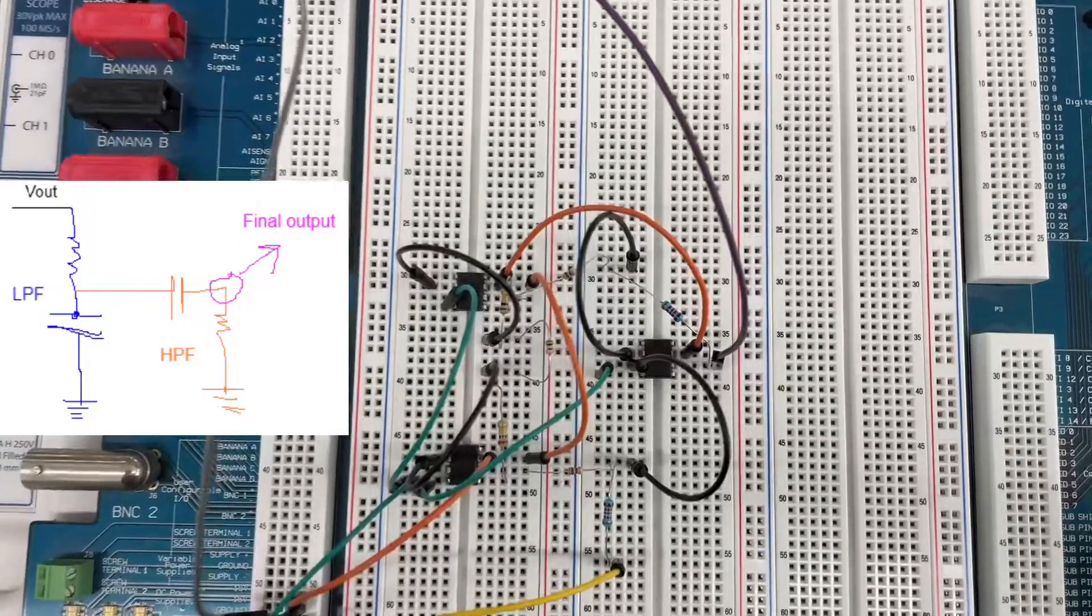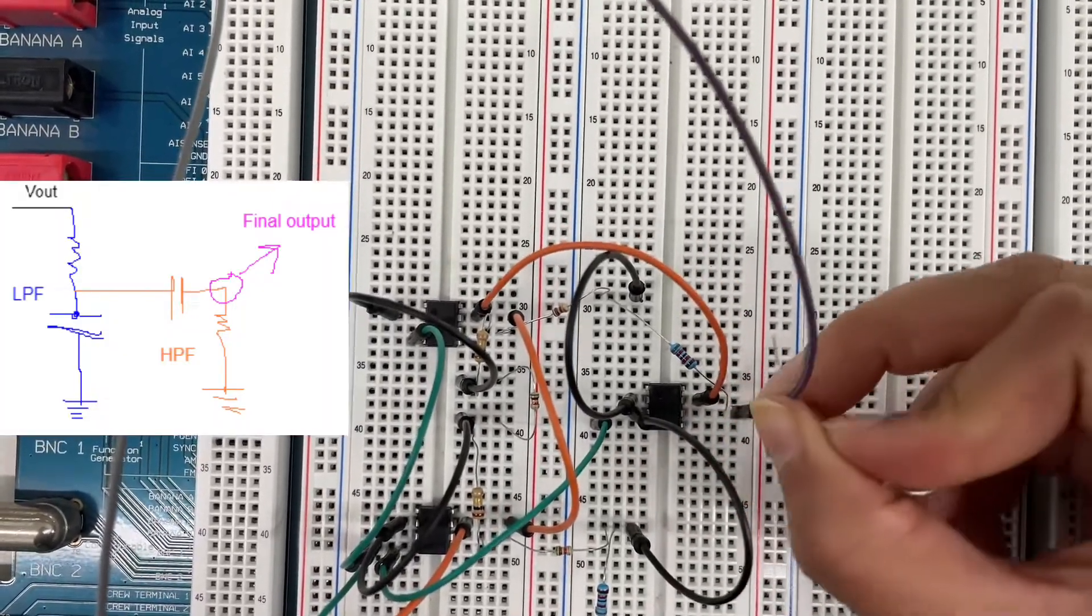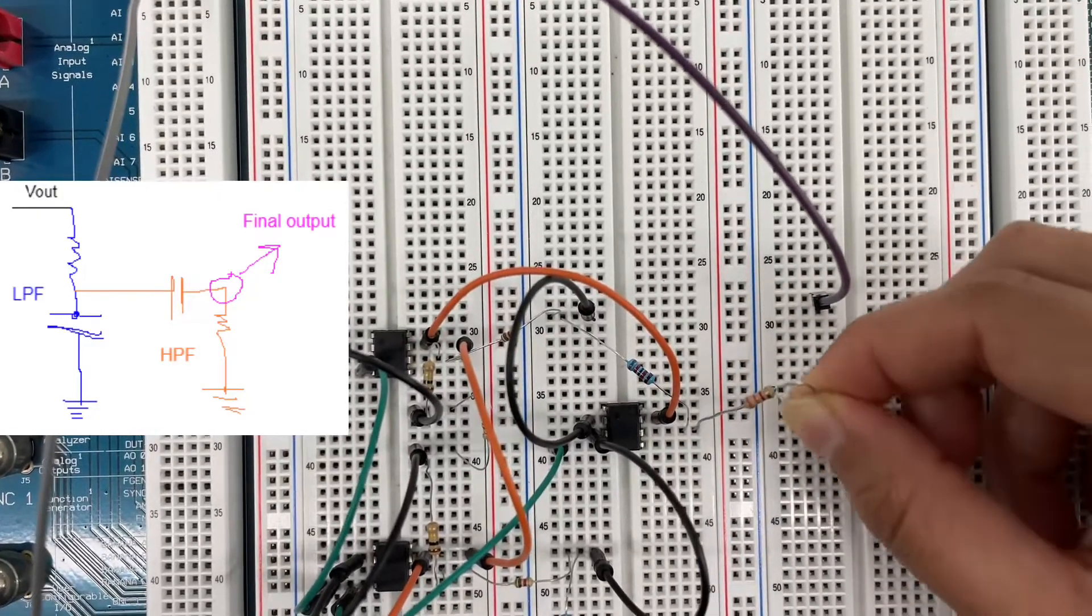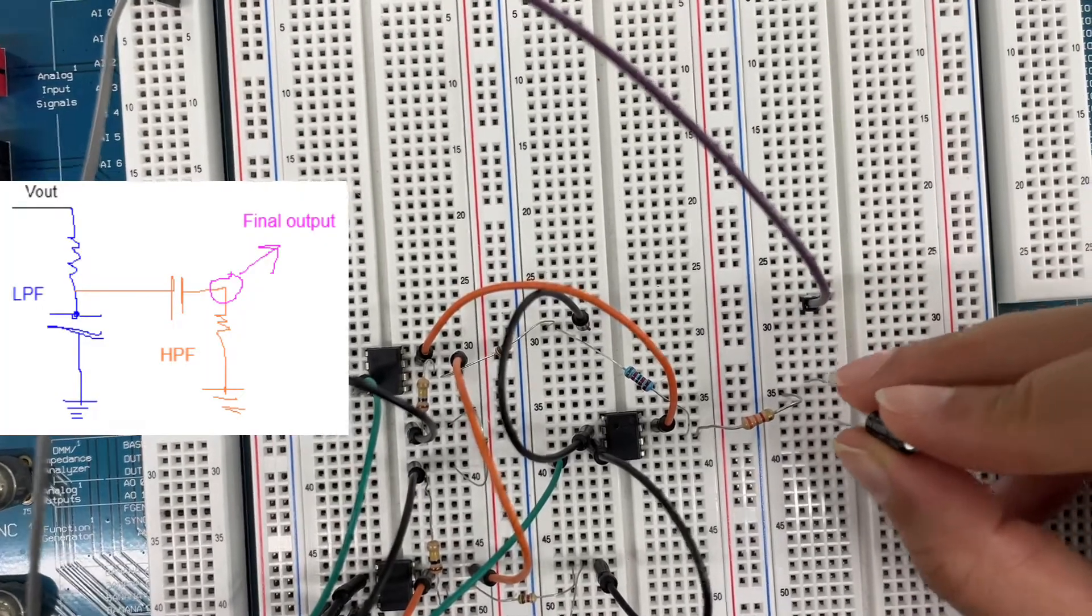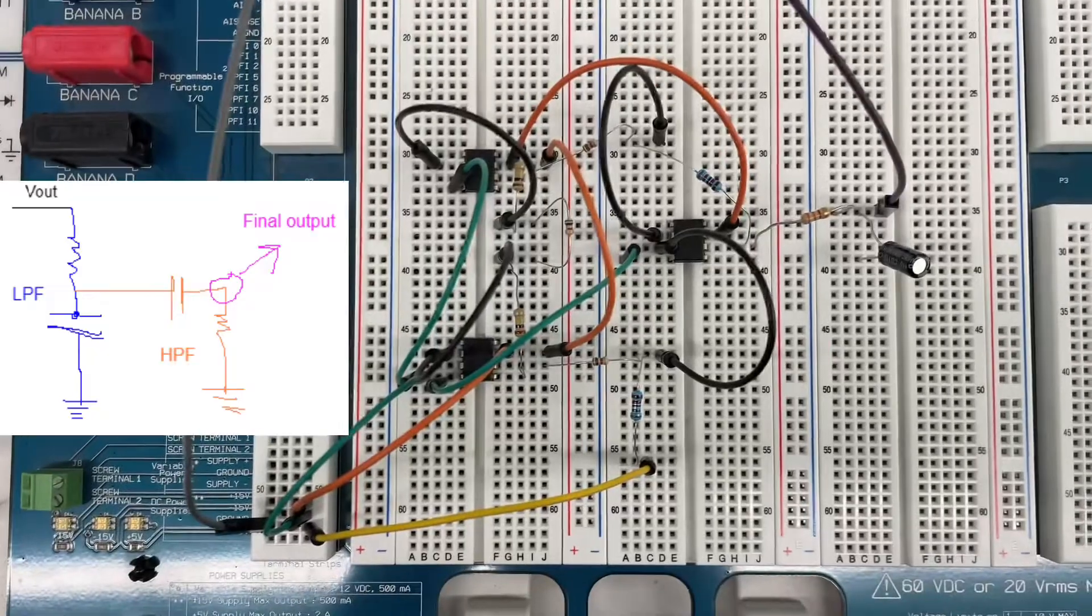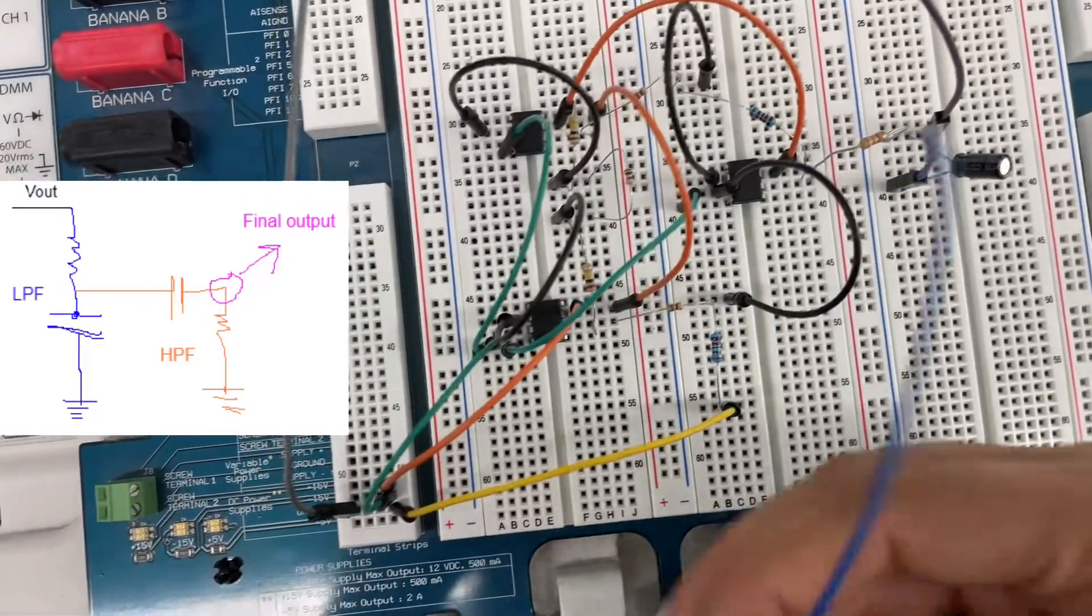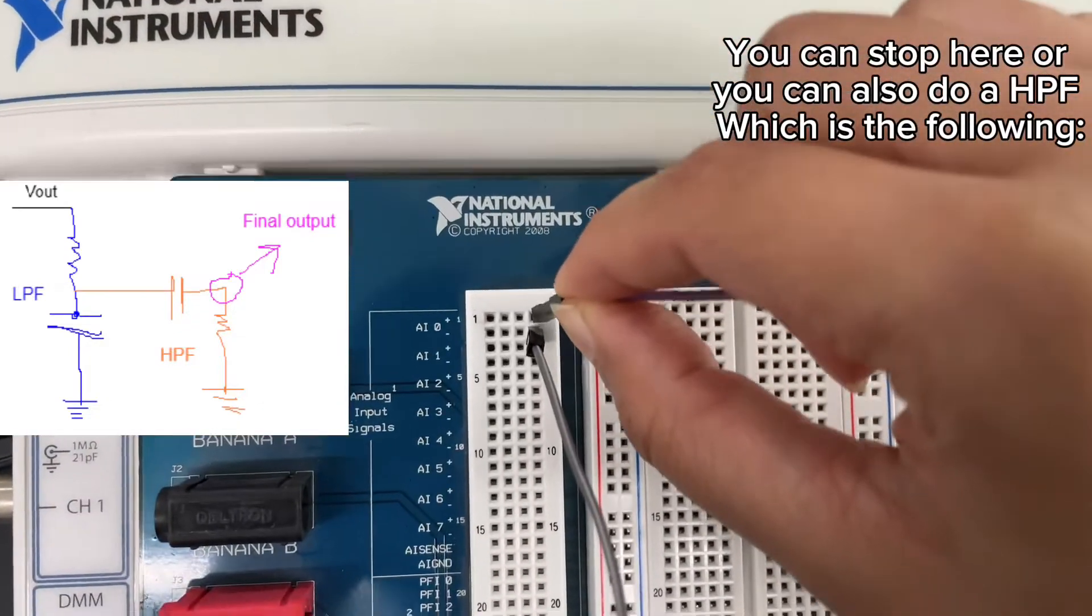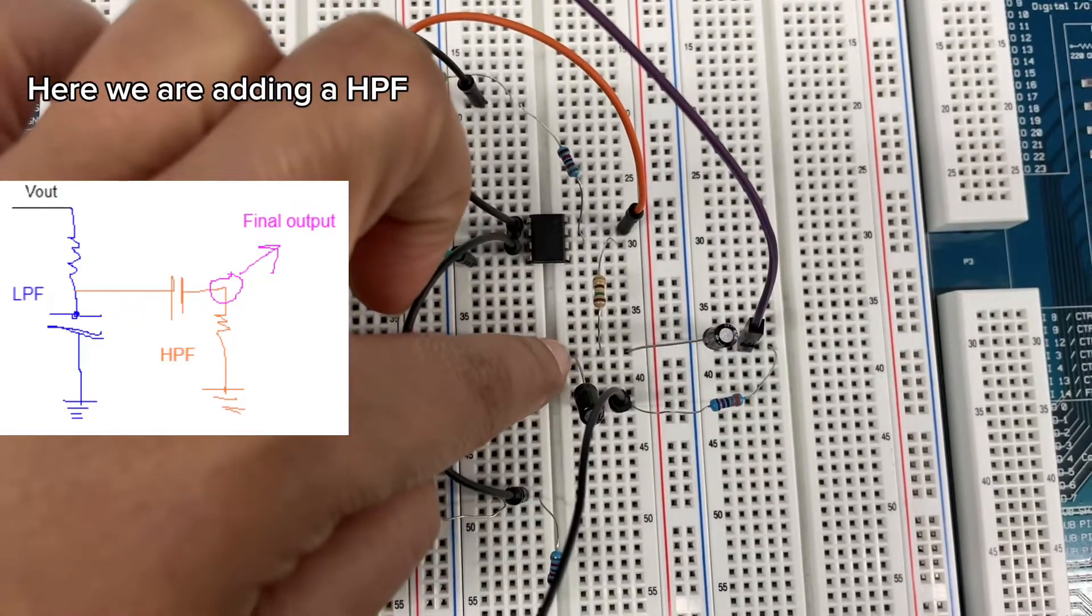In addition to my instrumentation amplifier, I'm going to add an RC filter, a low pass filter from the output of the last op amp. Taking this resistor and a capacitor. This capacitor needs to be grounded. I'm taking the output from between the resistor and capacitor, and this is connected to channel AI zero plus and the minus is connected to ground.